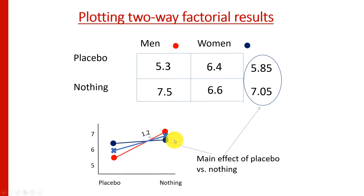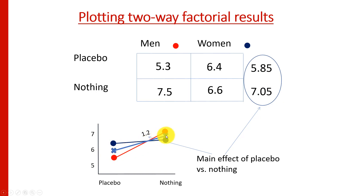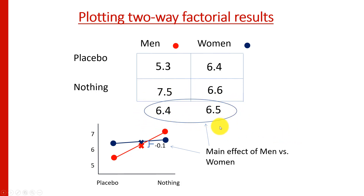To visualize the main effect of placebo, we average across males and females. In the placebo group we average 5.3 and 6.4 to get 5.58; in the nothing group we average 7.5 and 6.6 to get 7.05. The difference between those two averages — represented by a line starting and stopping at the average of men and women for both groups — is a change of 1.2. For the main effect of gender, we average within each gender across the two placebo conditions: men average 5.3 and 7.5 to get 6.4, and women average 6.4 and 6.6 to get 6.5, a difference of only 0.1.